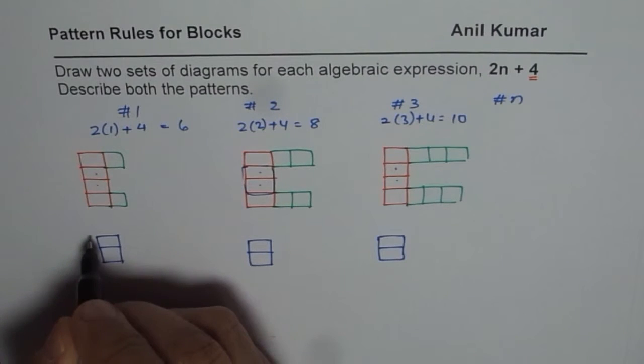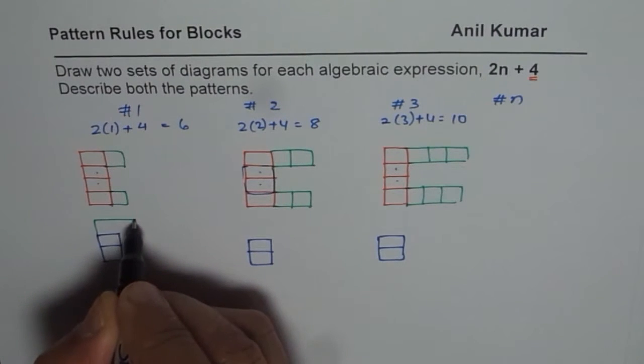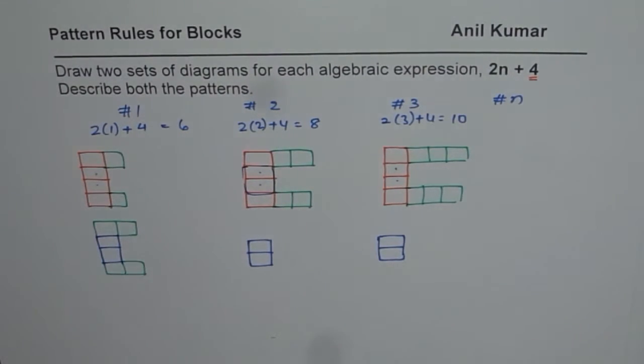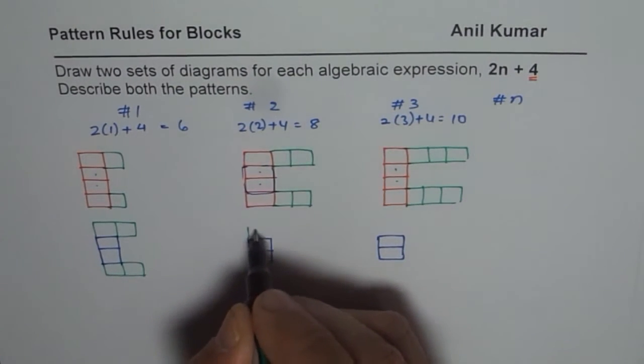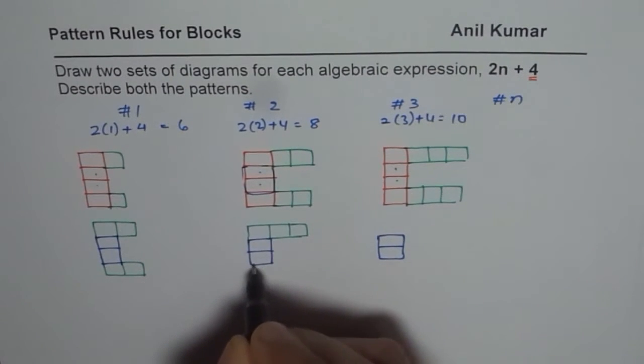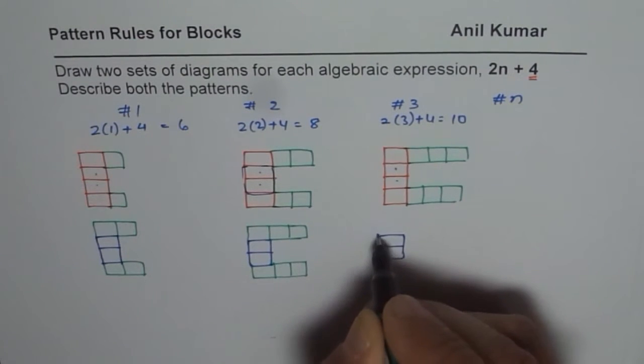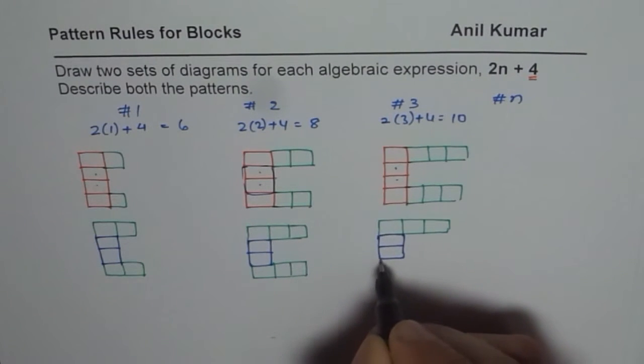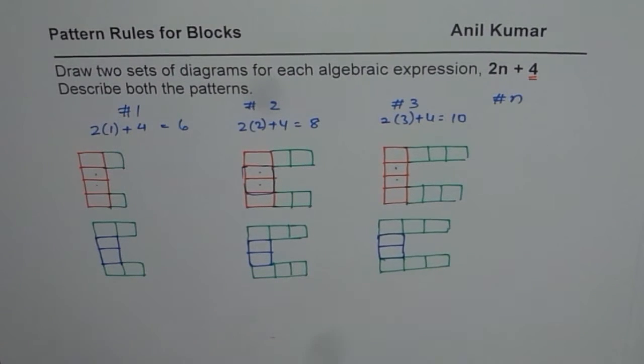I'll change the top part. Instead of one more on each side, I can have two more on top. I still have the same number of blocks, but the pattern looks different. We can have a different rule giving us the same number of blocks. This is extremely interesting and creative.